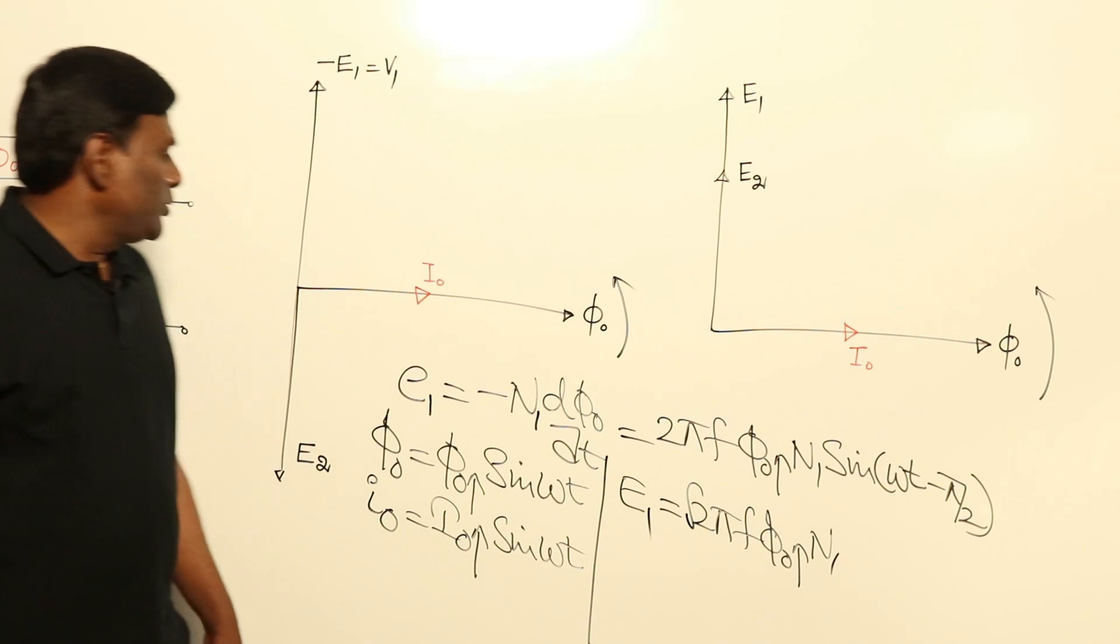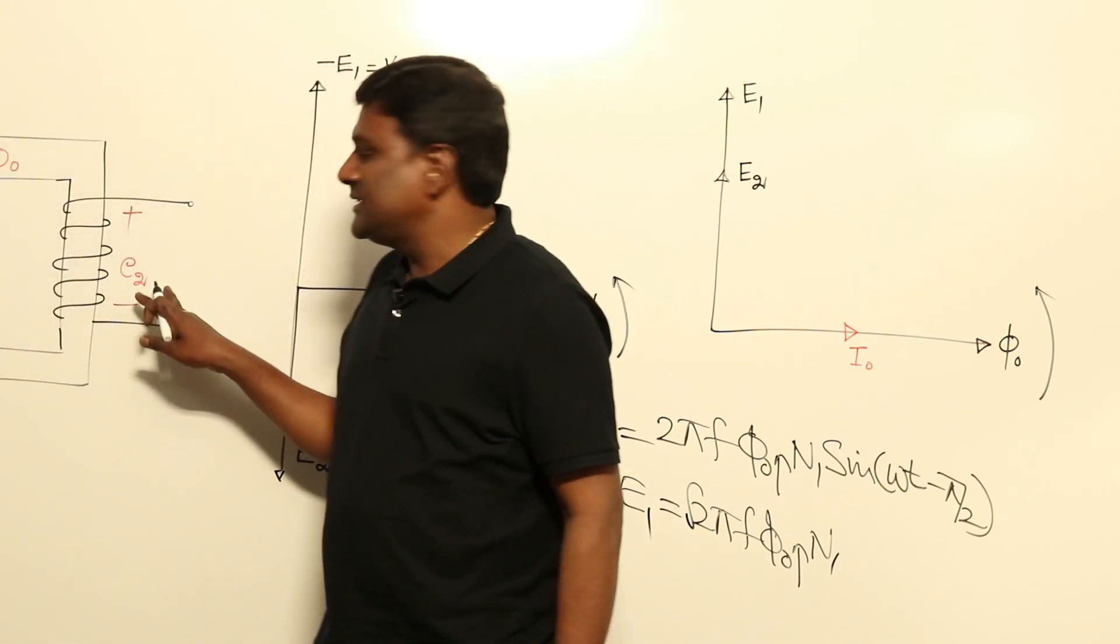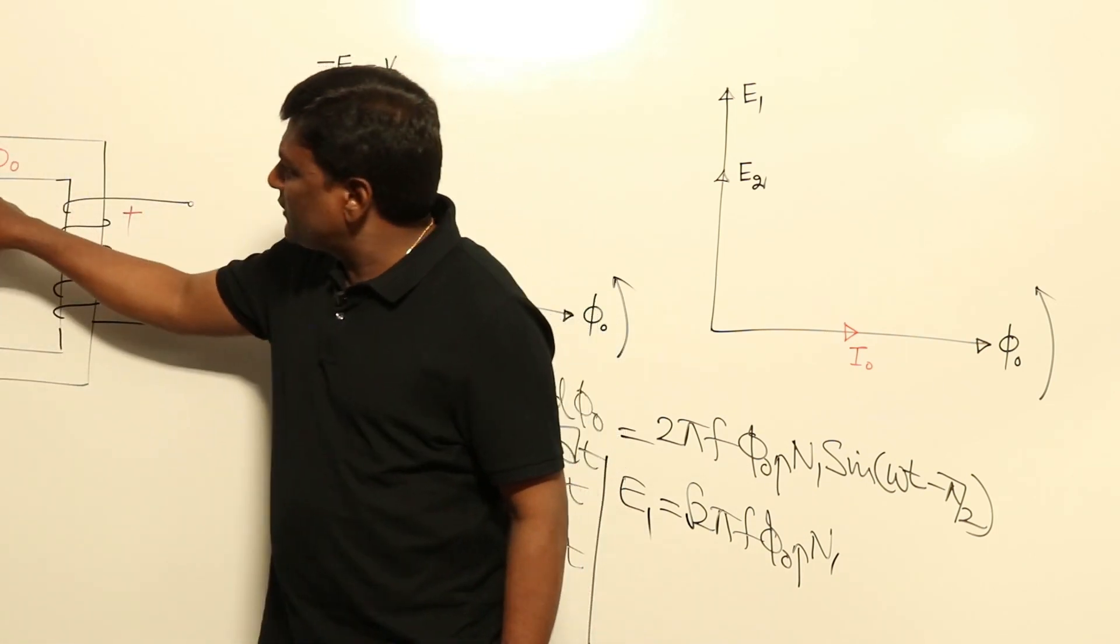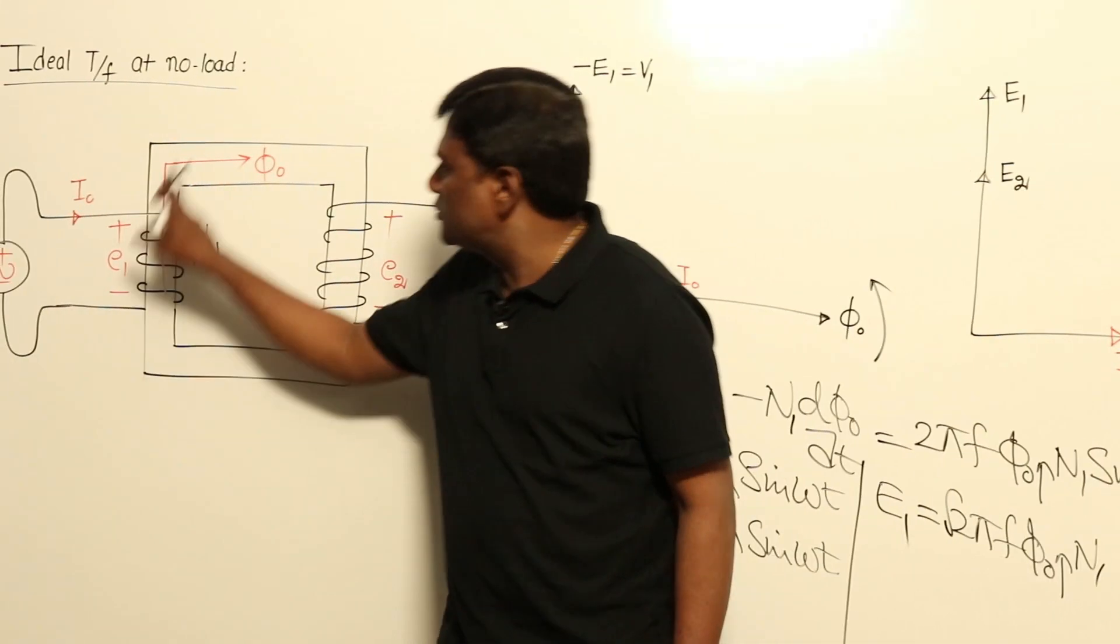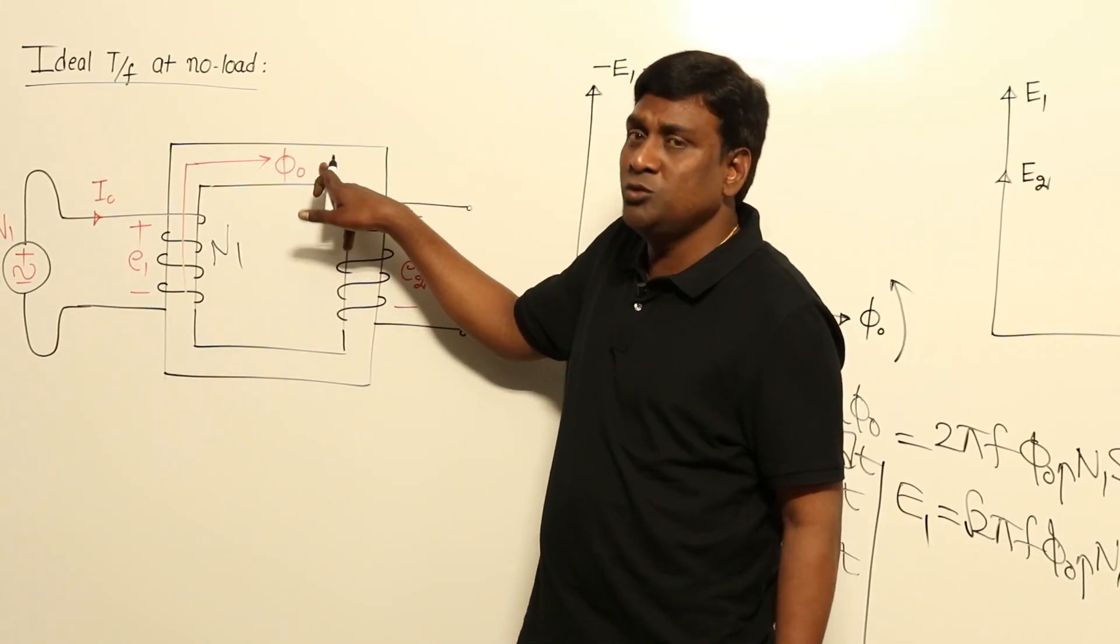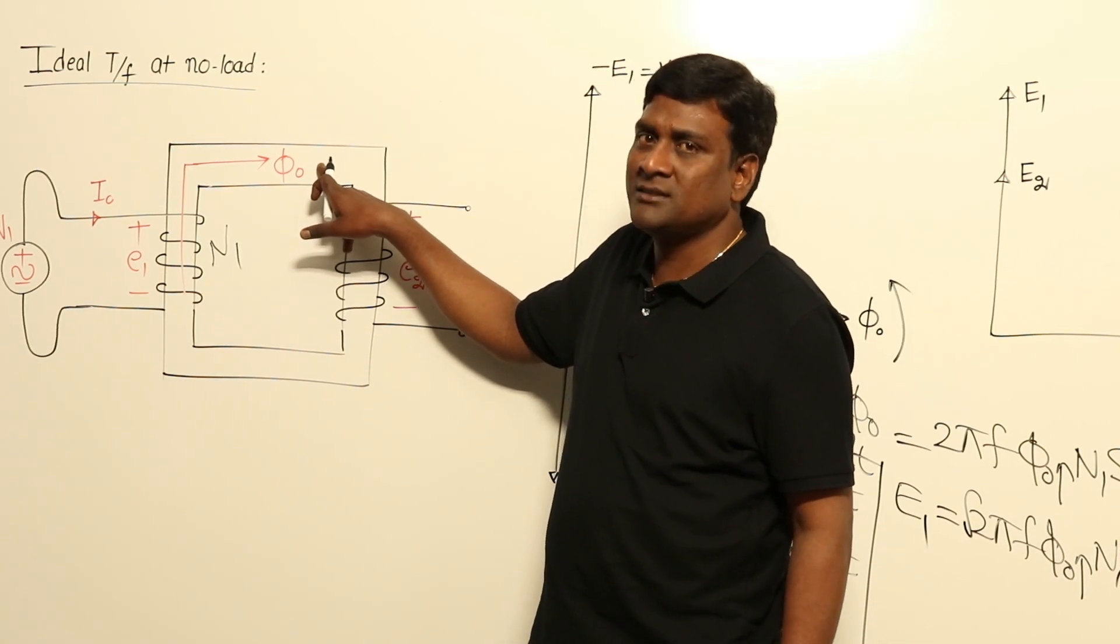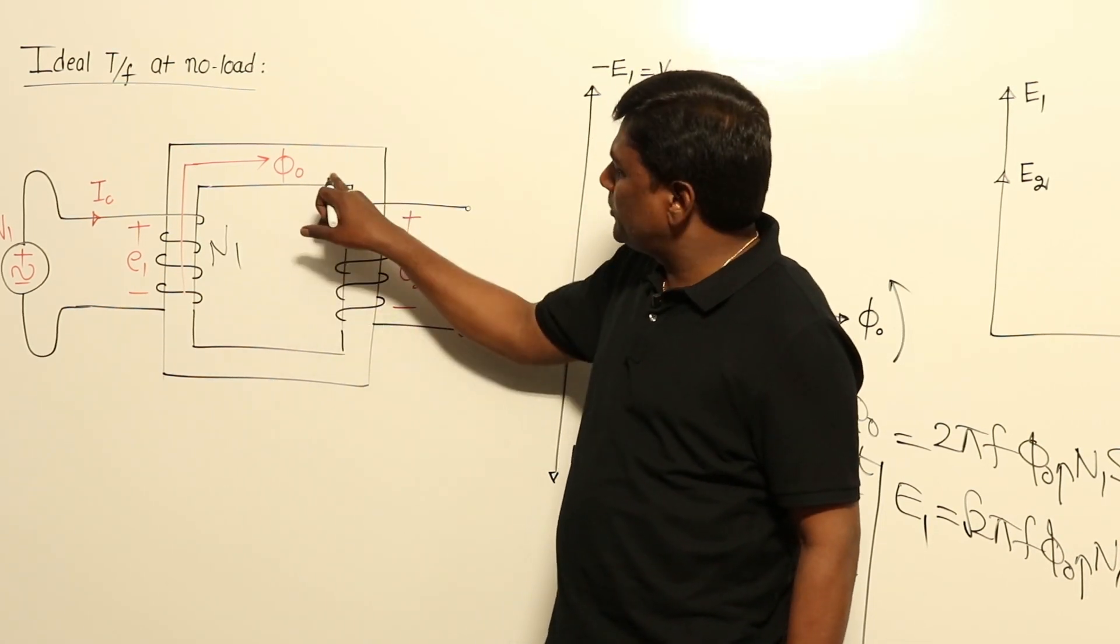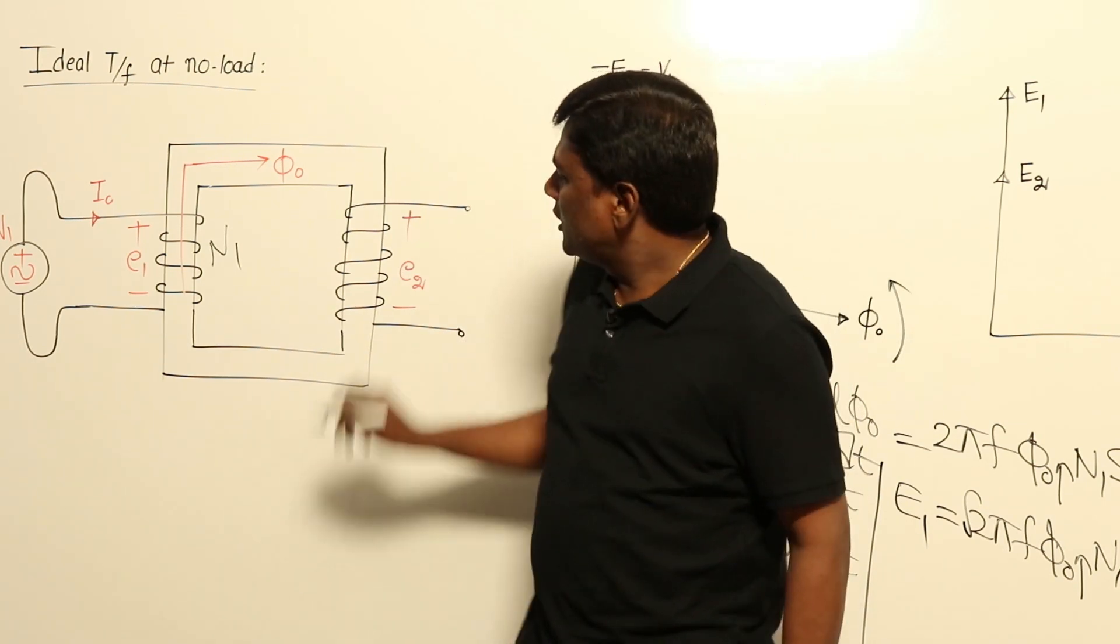Similarly, if you try to calculate induced voltage here E2, because same flux is going to link this also, and same flux is going to link this also. So sinusoidal flux, time varying flux, so induced voltage should be there by Faraday's law of electromagnetic induction.